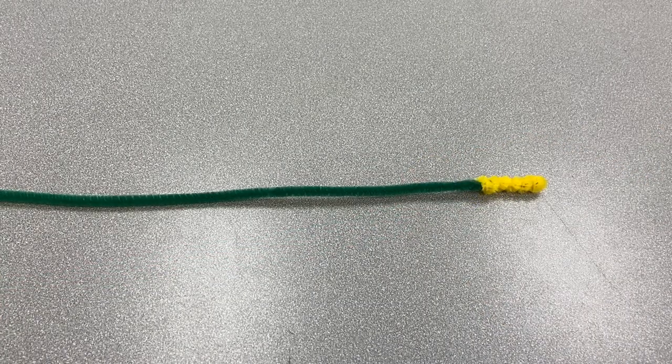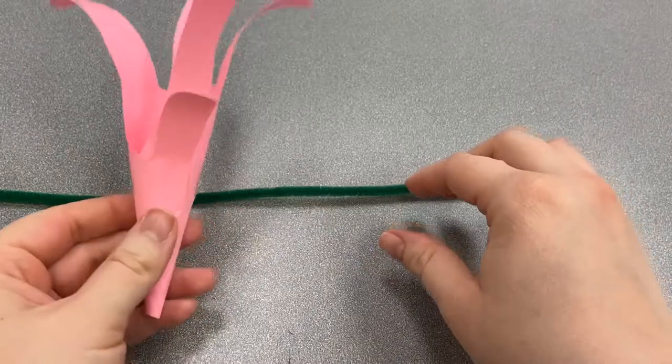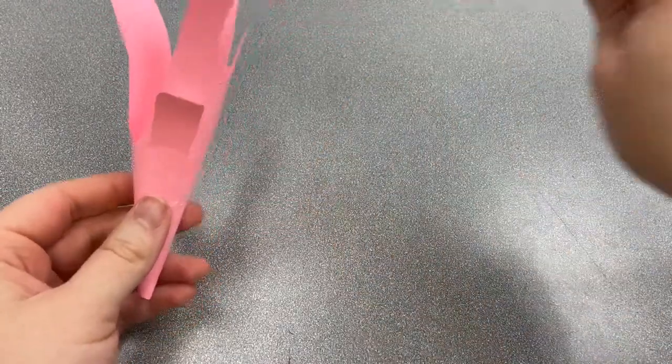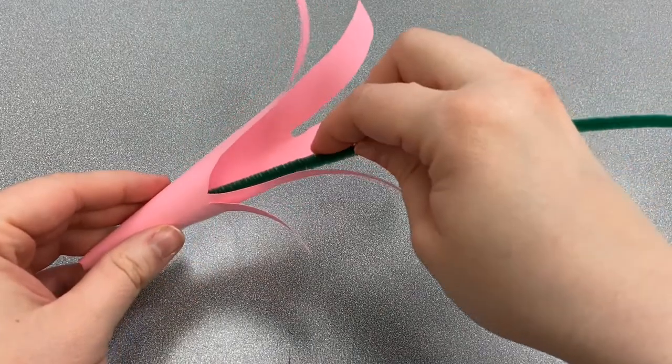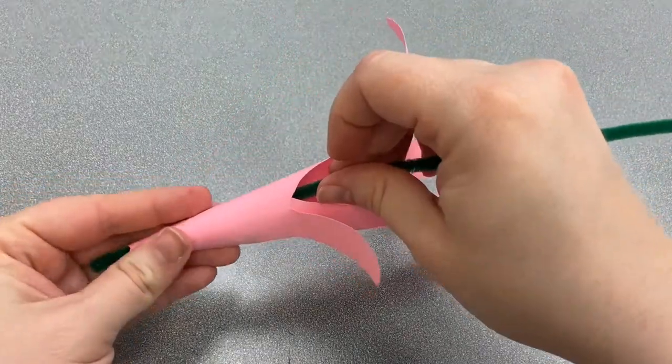Now that the stem is finished, we're going to take our flower and take the bottom of the stem, the green part, and we're going to put it in the middle of our flower.